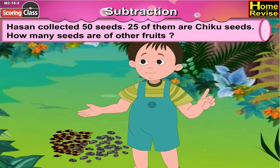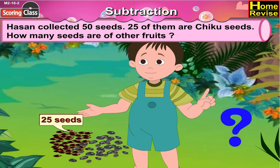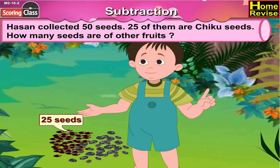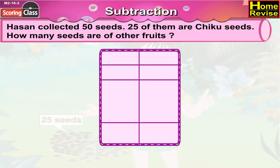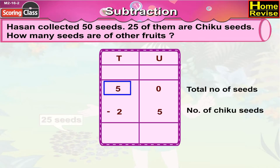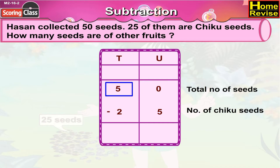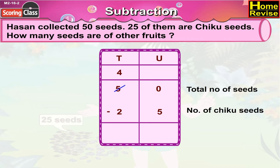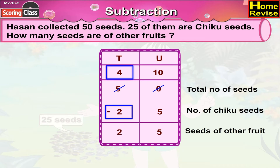Word problem: Hassan collected 50 seeds, 25 of them are Chiku seeds — how many seeds are of other fruits? Total seeds are 50 and Chiku seeds are 25. Seeds of other fruits would be 50 minus 25: 5 tenths 0 units minus 2 tenths 5 units. Since 5 cannot be subtracted from 0, we rewrite as 4 tenths 10 units. 10 minus 5 is 5, and 4 minus 2 is 2, giving 2 tenths 5 units — that is 25. The seeds of other fruits are 25.